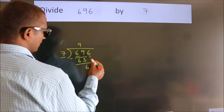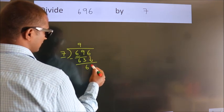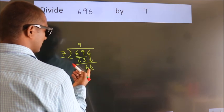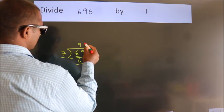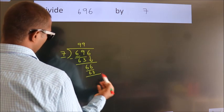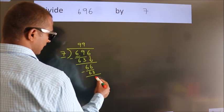After this, bring down the beside number. So 6 down, so 66. A number close to 66 in the 7 table is 7 nines, 63. Now we subtract. We get 3.